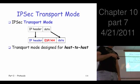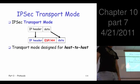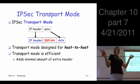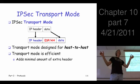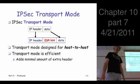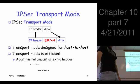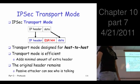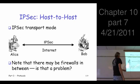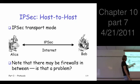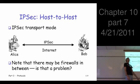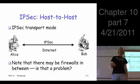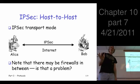Transport mode implies there's another option coming up. This is for so-called host-to-host communication, meaning Alice and Bob are actually doing IPSec and talking to each other using IPSec. It is the most efficient thing you can do. So in the host-to-host picture — Alice is talking to Bob, sending packets over the internet using IPSec — you would want to use transport mode.